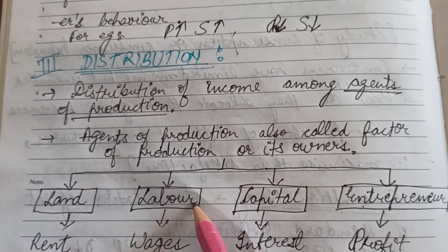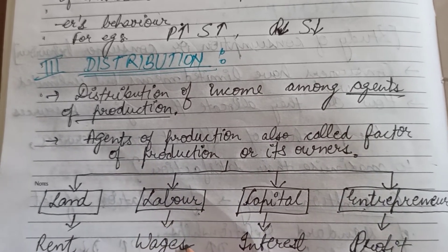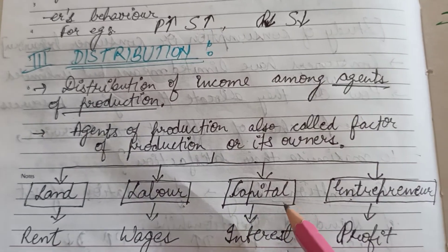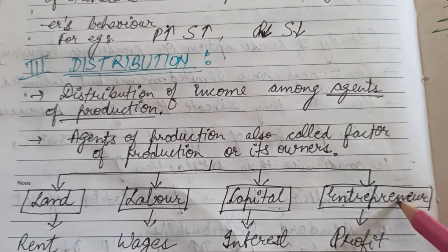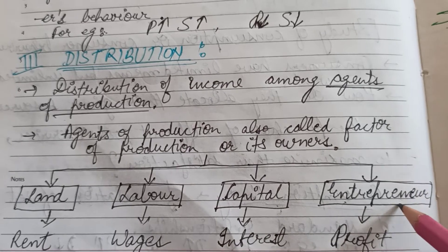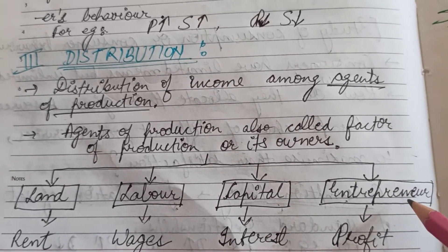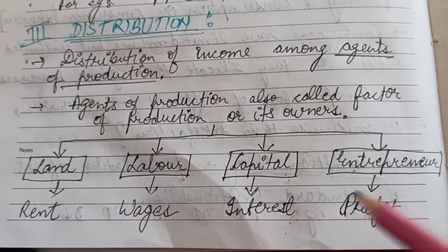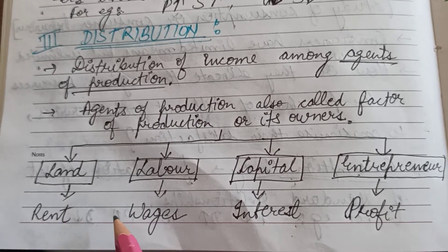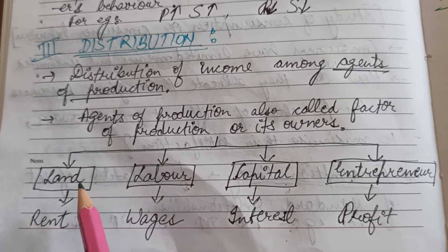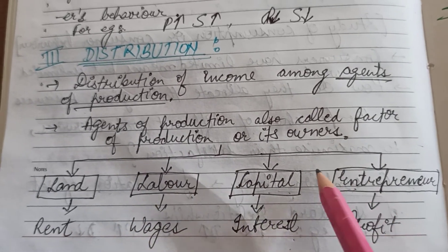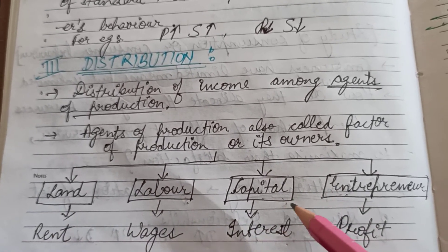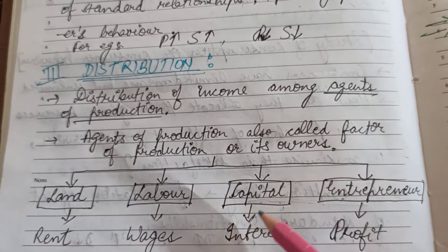Next comes labor — labor services are taken by the producers and in return they are provided with wages. Next comes capital, which may be in the form of money, and capital providers are given interest in return. The last factor of production is entrepreneur — the one who takes the initiative for starting any business; the idea of business comes from the entrepreneur, in return of which they are provided with profits. There are four factors of production — land, labor, capital, and entrepreneurship — with the help of which producers perform the production activity, and these factors are provided by the household sector.